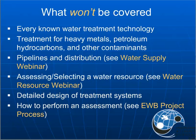We won't cover some topics today. We will not cover every known water treatment technology, nor treatments for heavy metals such as lead or mercury, petroleum hydrocarbons, or other contaminants. We won't cover pipelines and distribution systems — that's covered in part two — nor assessing or sourcing water resources, which is part one. We will not be going into detailed design of a treatment system, only a general overview of the technologies. For project process assessments, consult the EWB USA documents.